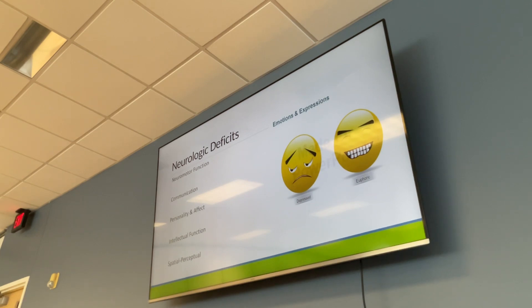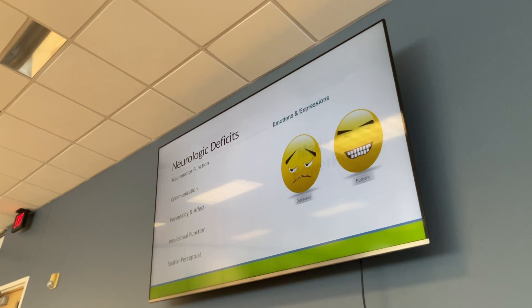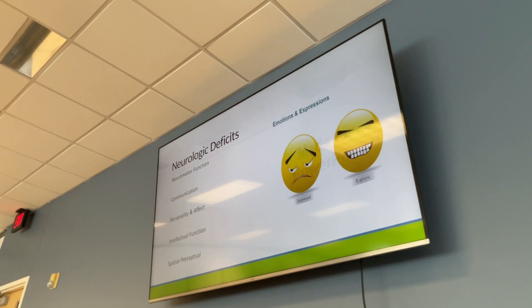In summary of neuromotor findings: watch for weakness, arm/leg/facial paralysis, and eyelid drooping. Communication deficits include expressive aphasia, receptive aphasia, and articulation problems. Personality and affect vary — depressed or euphoric, cautious or impulsive — depending on the stroke type. Categorize these signs into the different stroke types.